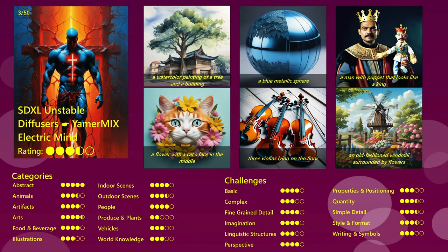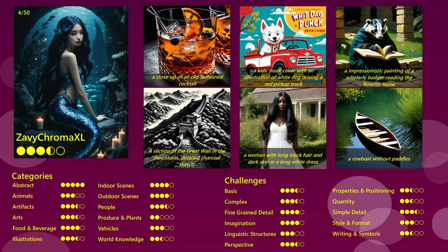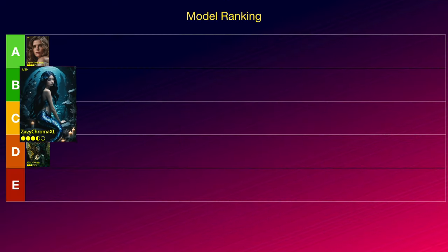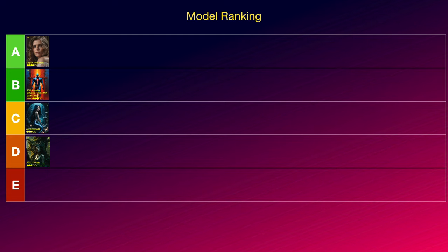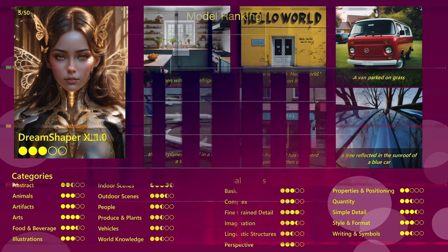The Yammermix Electric Mind model comes rather close to Copax Timeless, outperforms at abstract scenes and is above average at most other categories, so I will put it into B tier. Next is Savy Chroma XL, which also outperforms at abstract scenes and is above average at many other categories, but also has some weaknesses, so I am going to put it into C tier. Next comes Dream Shaper XL 1.0, which outperformed at indoor scenes. It has rather mixed results with other categories, but the overall impression was quite convincing and that is why I want to put it into C tier.